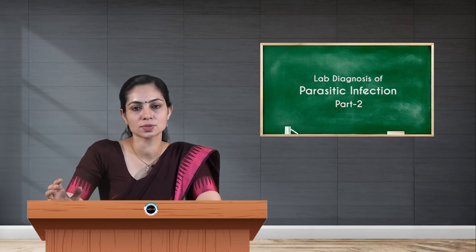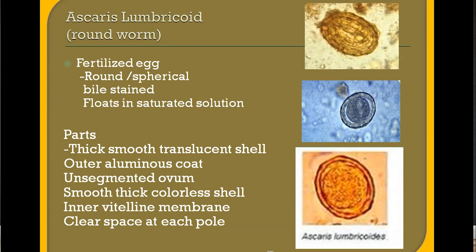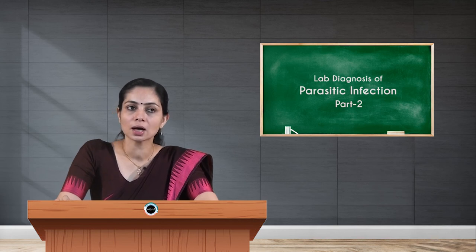Common helminthic eggs found by stool examination include Ascaris lumbricoides, the common ground worm. It has two types of eggs detectable by saline wet mount or concentration technique. The fertilized egg is round/spherical and bile-stained (brownish yellow). It floats in saturated solution with flotation technique. Parts include a thick smooth translucent shell, outer albuminous coat, unsegmented ovum in the center, smooth thick colorless inner shell membrane, and a clear space at each pole.